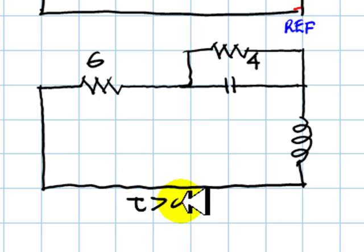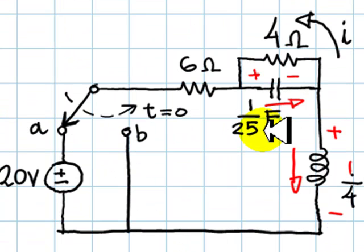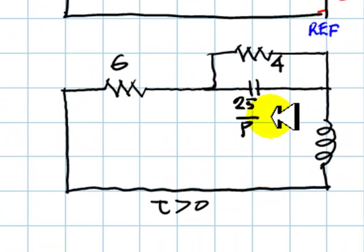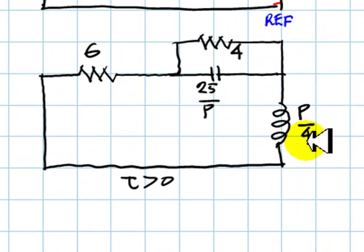For t greater than 0, using the p operator impedances, we represent the capacitor with its impedance, which will be 25 over p, and the inductor by its impedance, that will be p over 4.